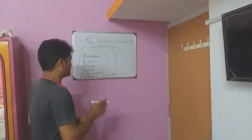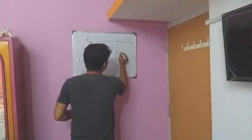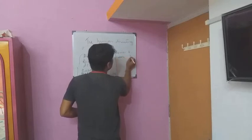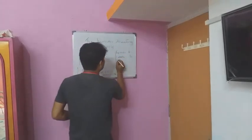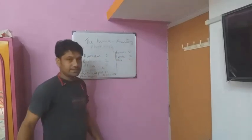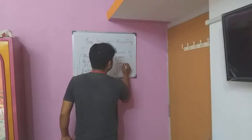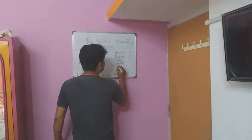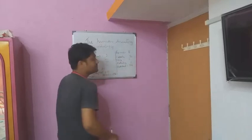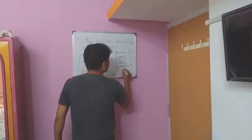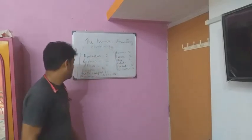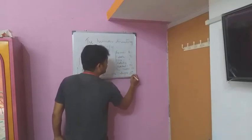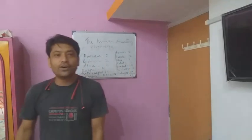The lower limbs also have 60 bones. Femur: 2 bones, fibula: 2 bones, tibia: 2 bones, patella: 2 bones — that is 8 bones. Tarsals: 14 bones, metatarsals: 10 bones, and phalanges: 28 bones — totaling 60 bones in the lower limbs.